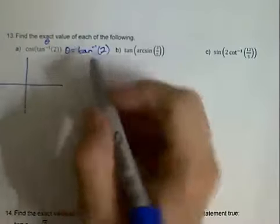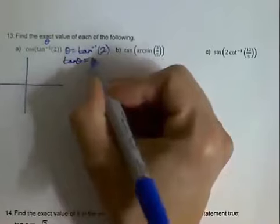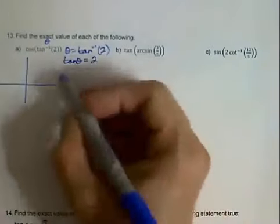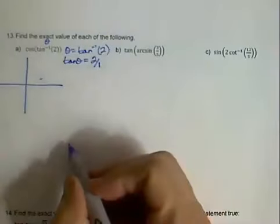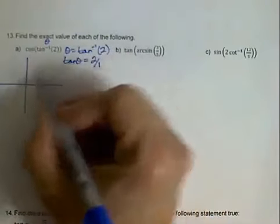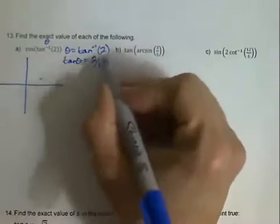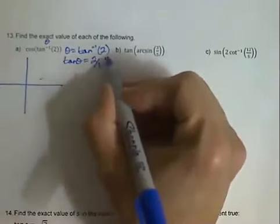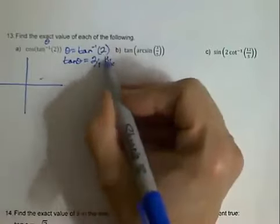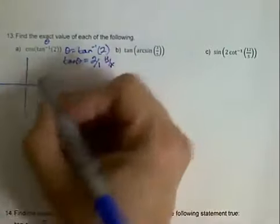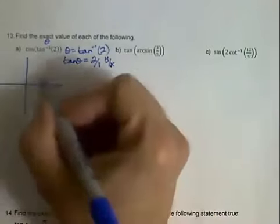If theta equals the inverse tangent of 2, that means the tangent of theta equals 2, which we'll write as 2 over 1. Remember that tangent equals y over x, so when we draw this, we make our y equal to 2 and our x equal to 1, giving us the point (1, 2) on the graph.